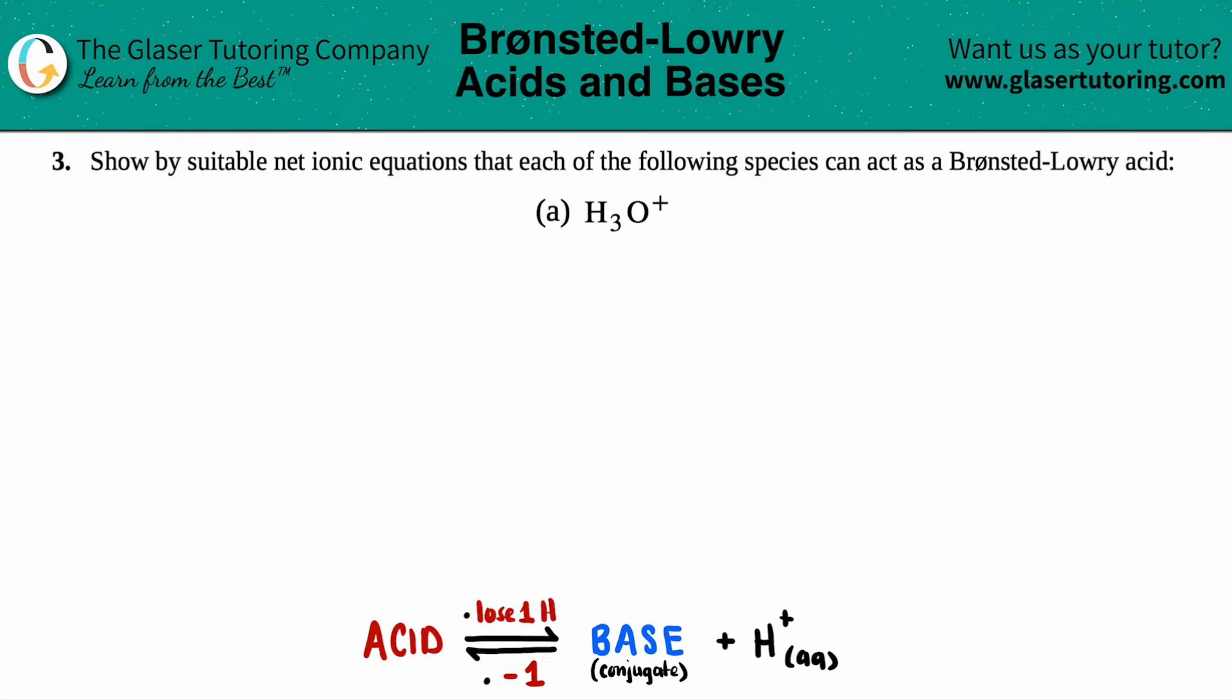Number three, show by suitable net ionic equations that each of the following species can act as a Bronsted-Lowry acid, and then we have letter A. So in this case, we just have to write an equation showing that H3O plus is acting as a Bronsted-Lowry acid. Now Bronsted-Lowry are just two scientists that developed this idea, but basically we're just writing a net ionic equation to say that this is an acid.